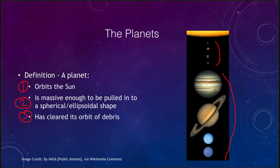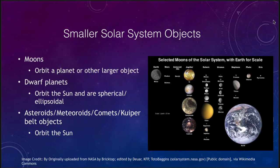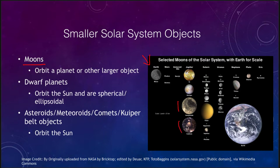There are also many smaller objects in the solar system. Moons orbit a planet or another larger object. We can see many moons here with the Earth shown for scale. Some are incredibly small — Phobos and Deimos are almost invisible at this scale. Some larger moons such as Ganymede, Callisto, and Titan are actually larger than our own Moon. Moons are found around all the giant planets from Jupiter through Neptune, as well as around Earth and Mars. Mercury and Venus have no moons.